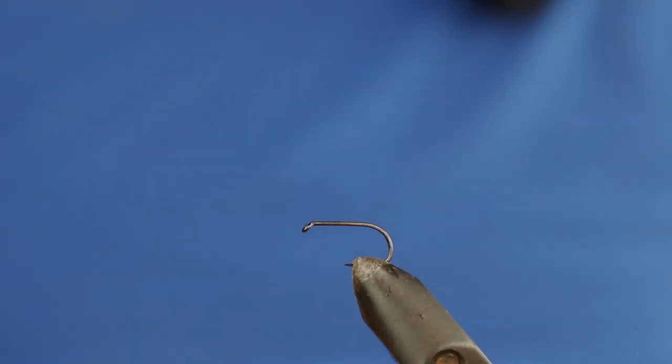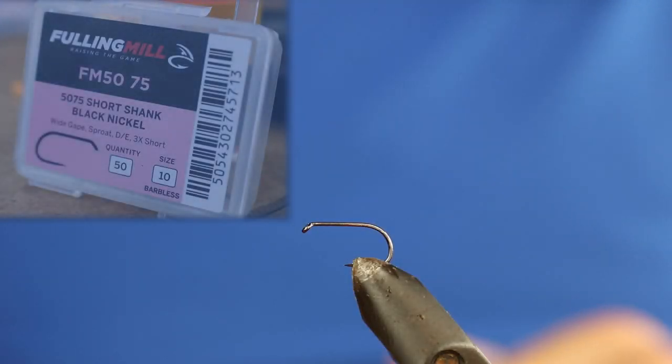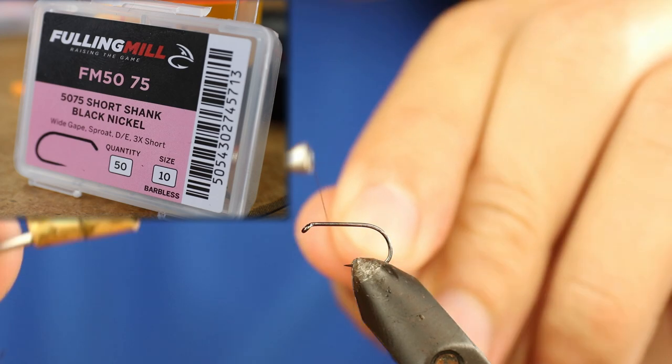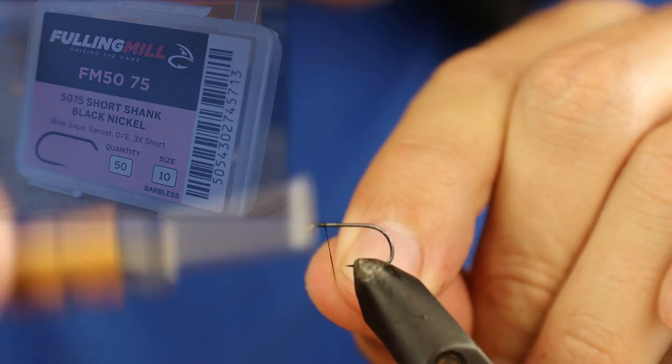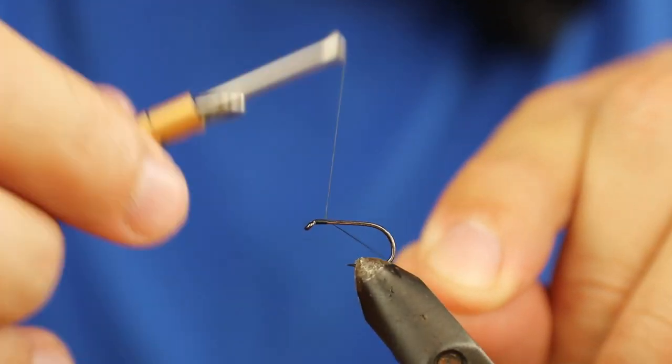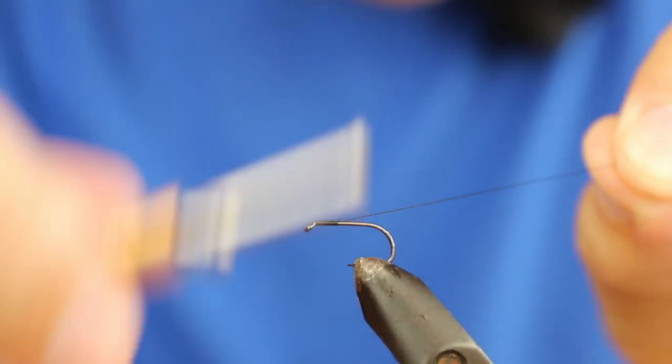The Cranberry Cruncher starts with an FM50 75 hook, size 10 black nickel. I'm going to take my black thread, which is 80 denier Uni-Thread, and wrap it down the hook.